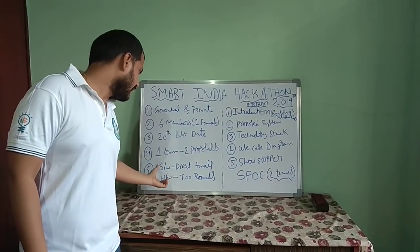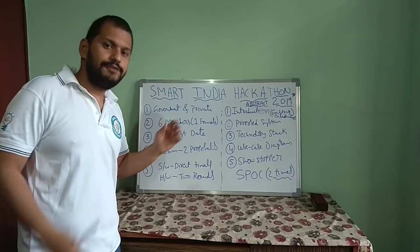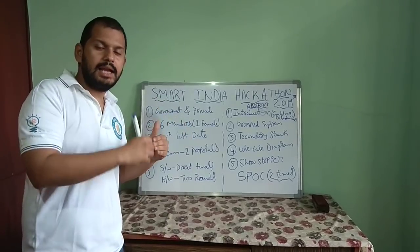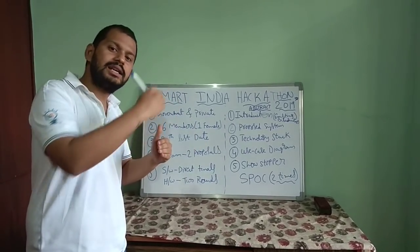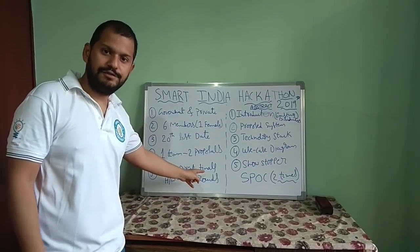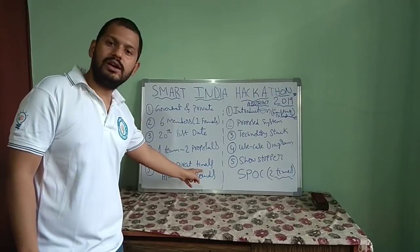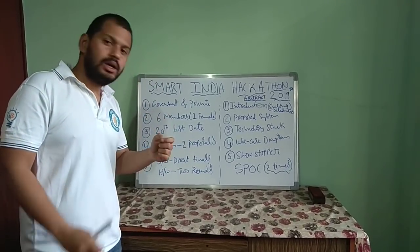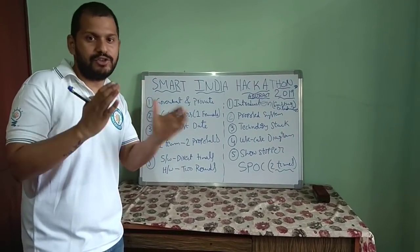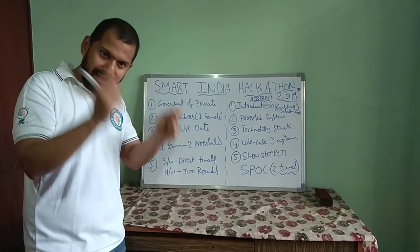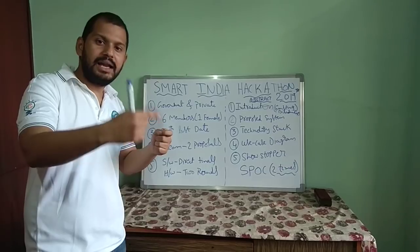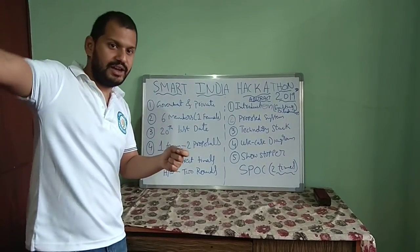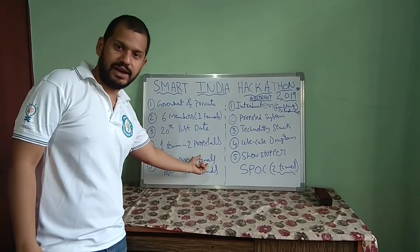As mentioned, there is a Software edition and a Hardware edition. If you submit your proposal and it gets selected under the Software category, you will directly go to the finals. But for Hardware, if your proposal gets selected, you need to build a working model or proof of concept, make a video, and upload it again. A panel from Smart India Hackathon will review your video, and if it is good, they will select you for the finals.